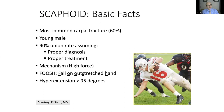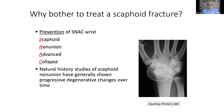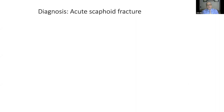Why worry about the scaphoid fracture? You're trying to prevent the consequences of scaphoid nonunion advanced collapse. There's a natural instability that happens when this relatively large bone in the wrist starts to move in an unstable way. The natural history is poor without treatment. The most important thing: a diagnosed scaphoid fracture does a lot better than a missed one.